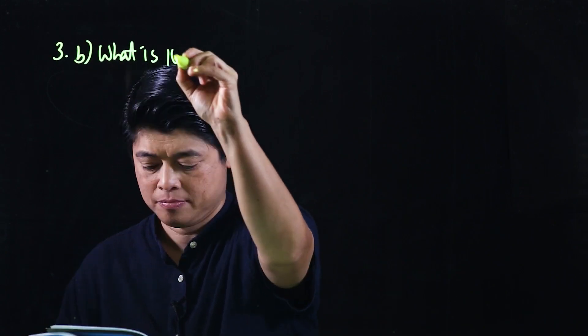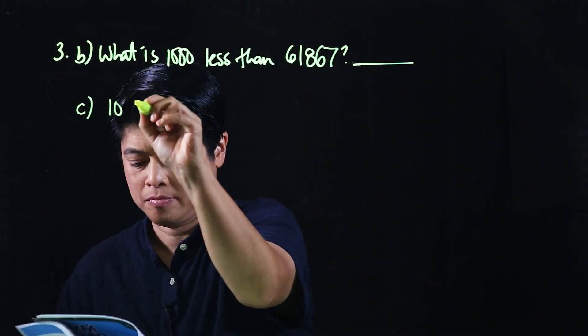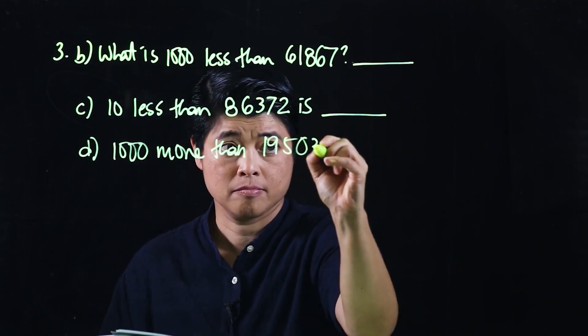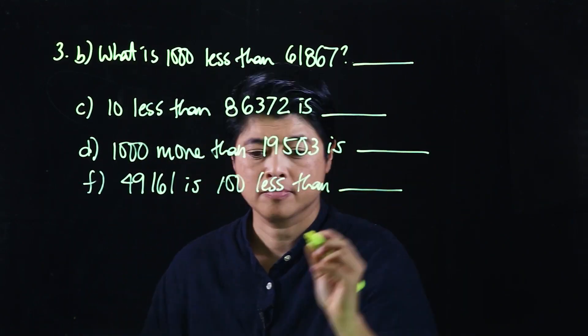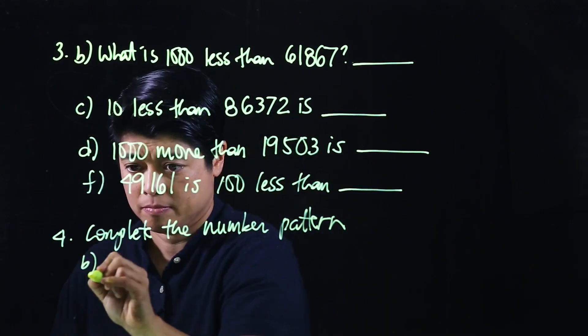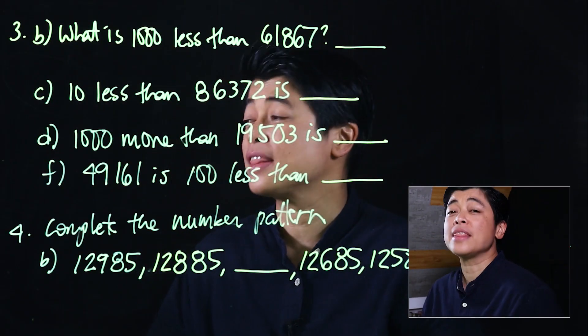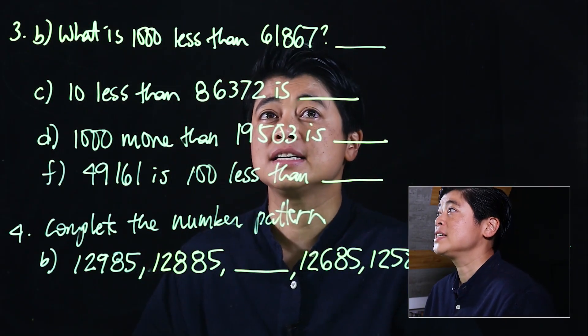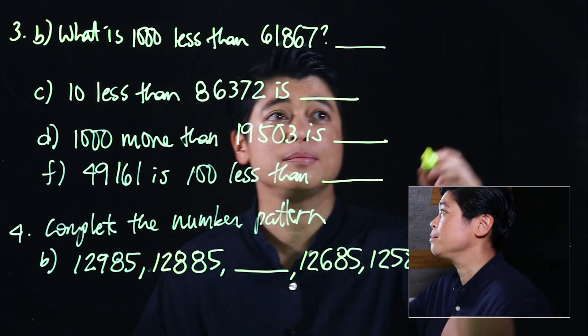The problems we'll be discussing are from page 22. We'll start with 3b. The question says: what is 1000 less than 61,867? So that means we're going to take away a thousand from 61,867.